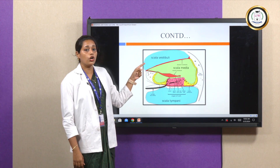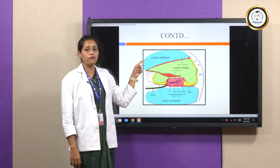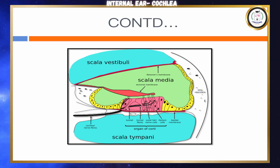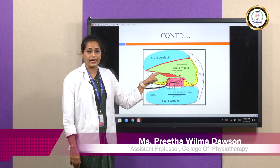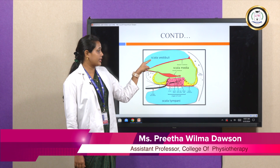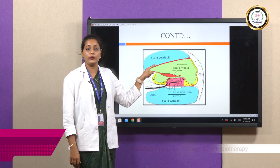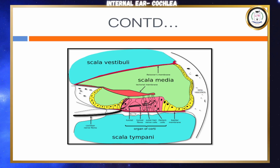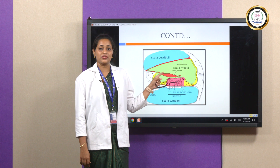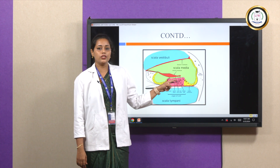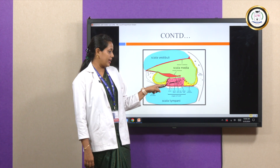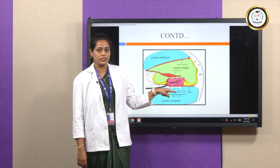The scala vestibuli and scala tympani contain perilymph, which has low potassium and high sodium levels. The scala media contains endolymph, which has high potassium and low sodium levels. The scala vestibuli is also known as the vestibular duct, the scala tympani as the tympanic duct, and the scala media as the cochlear duct. The organ of Corti is also present within the cochlea.